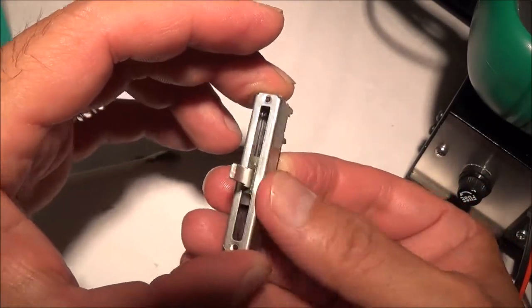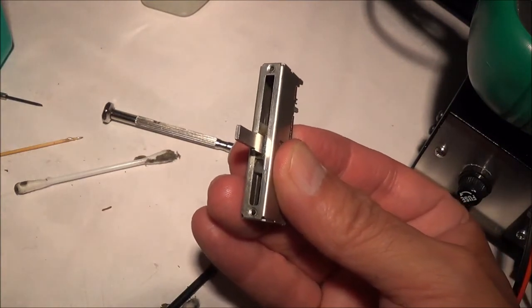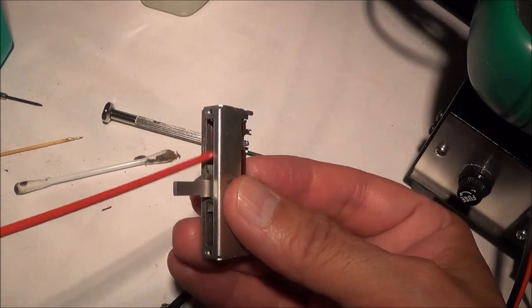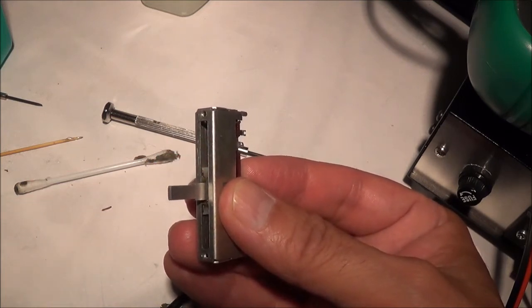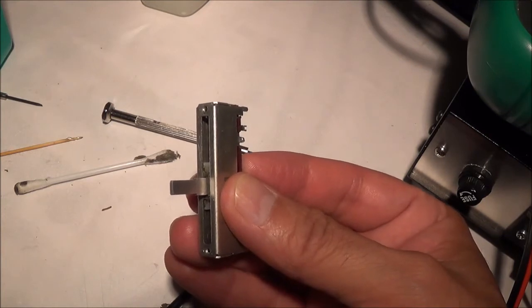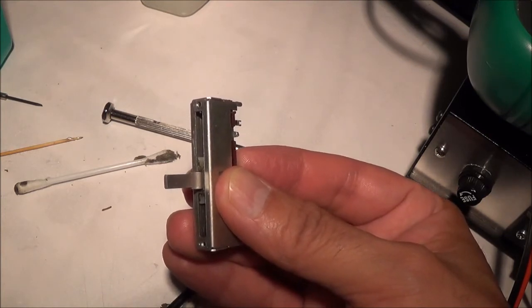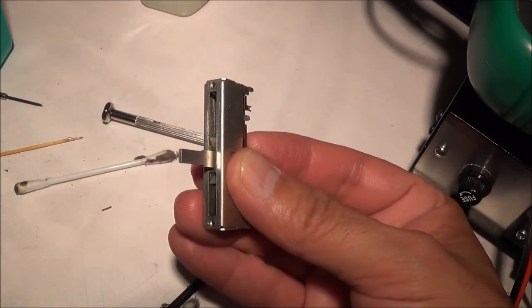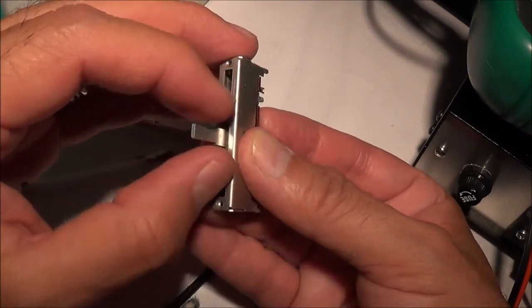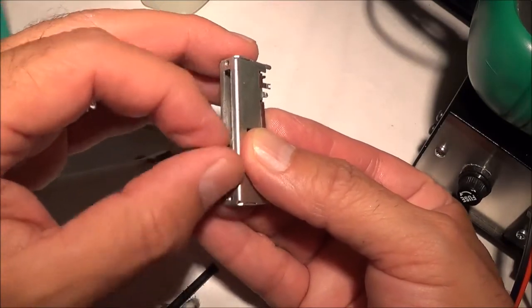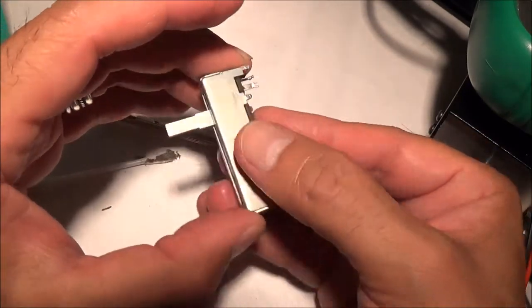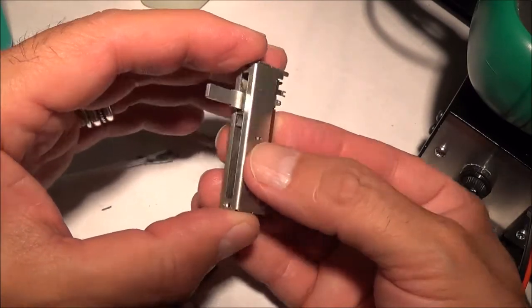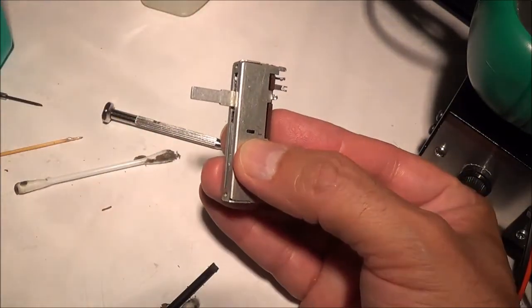Once I close it up, I'm going to spray some of my contact cleaner in there. My contact cleaner has lubricant in it, because you can't just use any old contact cleaner. You need something with lubricating properties, which is what mine has. So I'm going to close this back up, spray the contact cleaner with the lubricant in there, and then solder it back on the board.